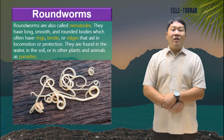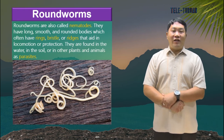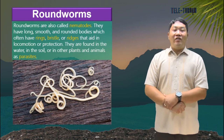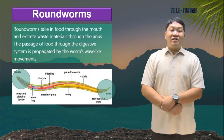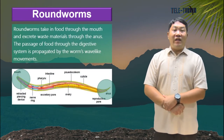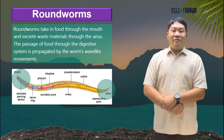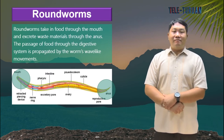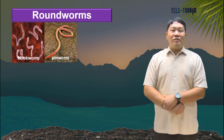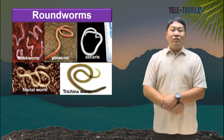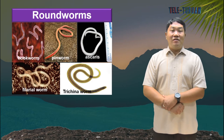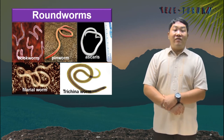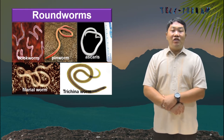Roundworms are also called nematodes. They have long, smooth, and rounded bodies which often have rings, bristles, or ridges that aid in locomotion or protection. They are found in water, in the soil, or in other plants and animals as parasites. Roundworms take in food through the mouth and excrete waste through the anus, with the passage of food propagated by the worm's wave-like movements. Some roundworms such as hookworms, pinworms, ascaris, filarial worms, and trichina worms are parasitic. Ascaris, hookworms, and pinworms can enter the stomach and intestines and cause damage. Trichina worms infest the tongue and diaphragm and cause serious injury. Filarial worms can infest the body and make the legs and feet swell — a condition known as elephantiasis.